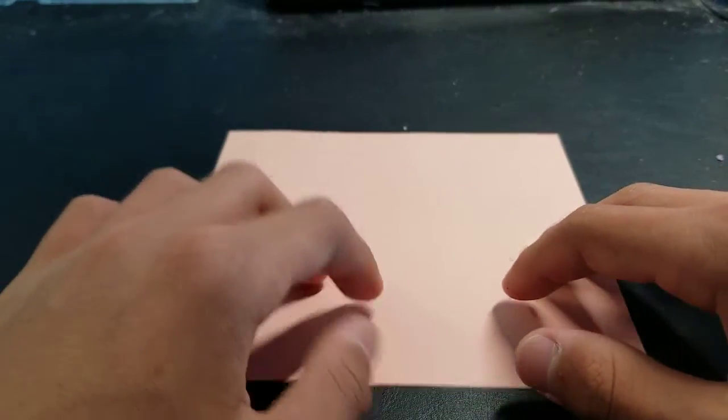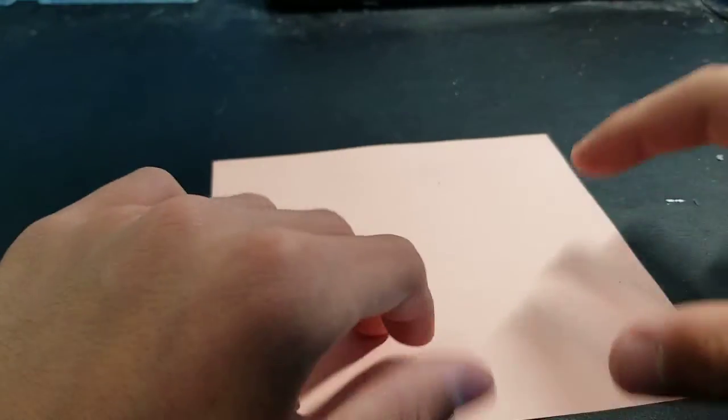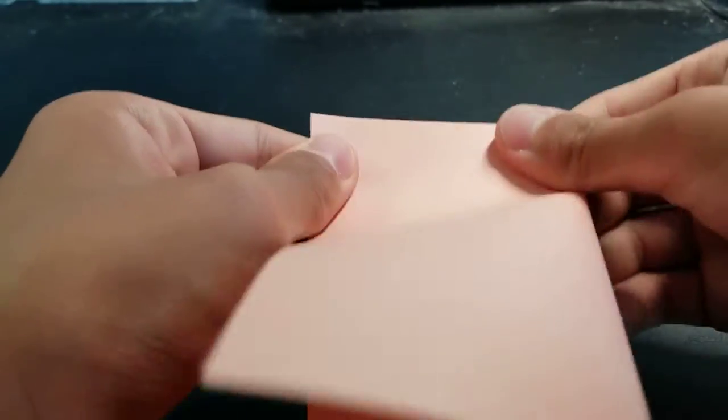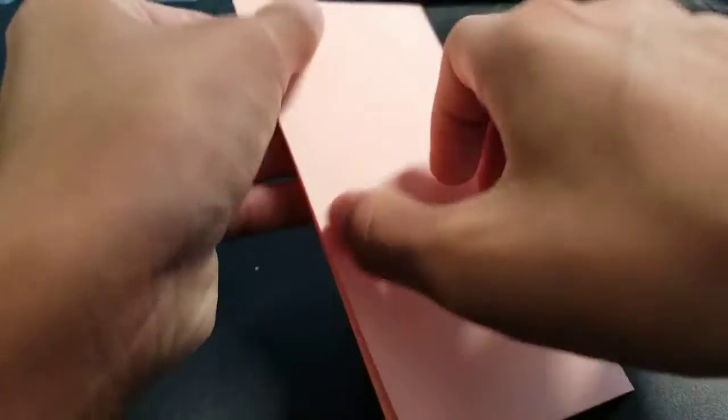I'll be showing you how to make an inflatable rabbit, so you will need a single piece of square paper. To start off, fold it in half and crease, and fold it in half the other way.